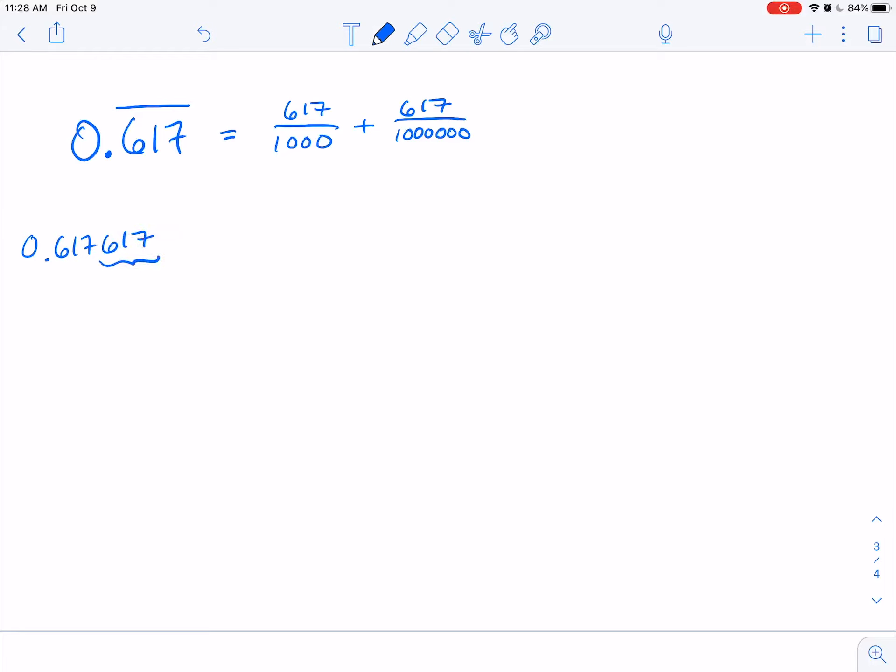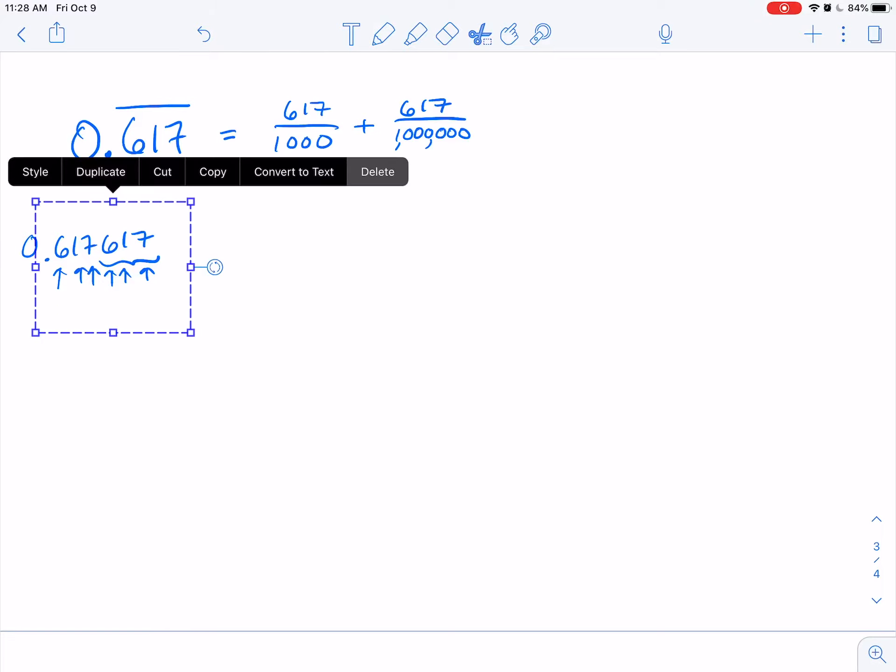This right here is 617 over the tens, hundreds, thousands, ten thousands, hundred thousands, one million. So yes, 1, 2, 3... I did not start easy, but here we go.